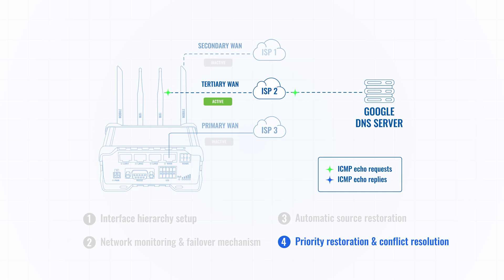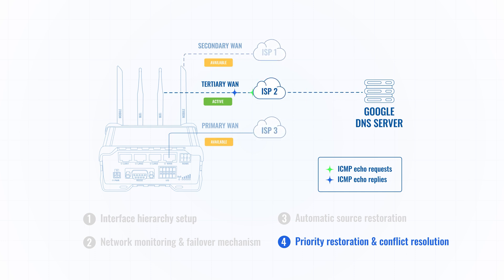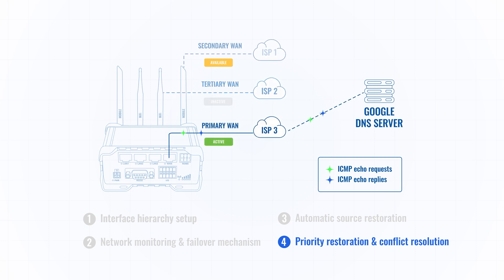But if both mobile and wired connectivity sources come back up at the same time, the failover will switch back to use wired connectivity, because this interface was set to have the highest priority in this hierarchy.